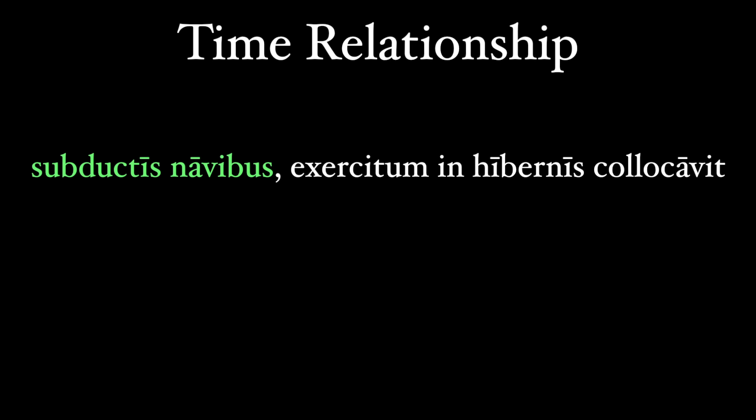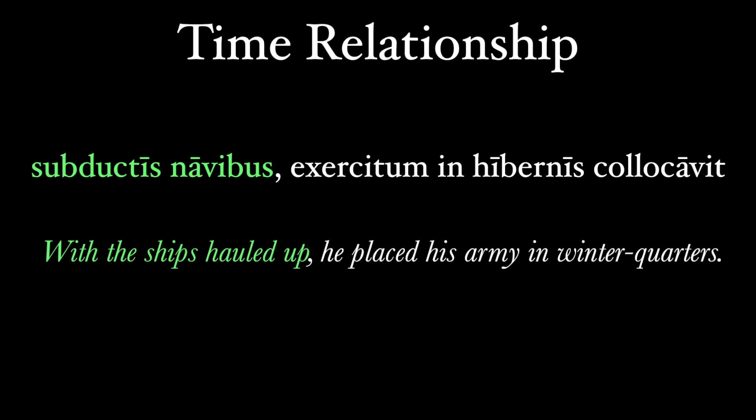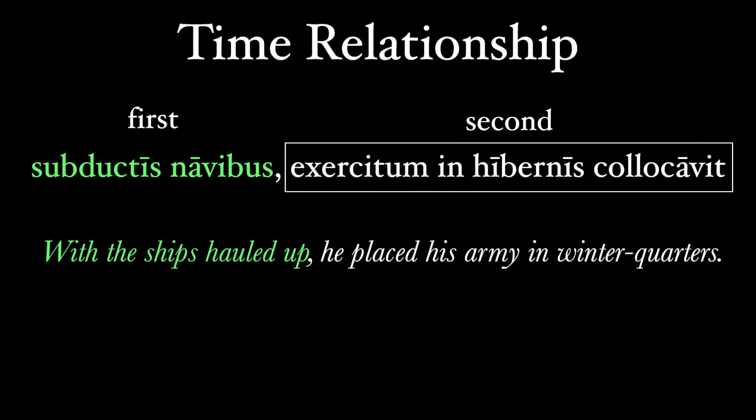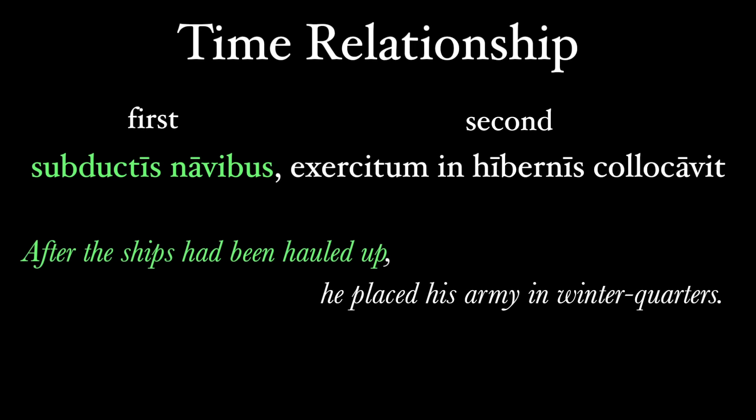In sentences with perfect participles, the ablative absolute phrase is done and completed by the time the action in the main clause happens. 'Subductis navibus, exercitum in hibernis collocavit' — 'With the ships hauled up, he placed his army in winter quarters.' The ships were taken out of the water first, and then the army was sent into winter quarters. We could translate it as 'after the ships had been hauled up,' but we must use the pluperfect tense, since the hauling happened before 'collocavit,' which is in the perfect tense.